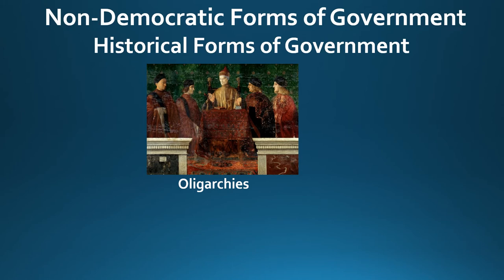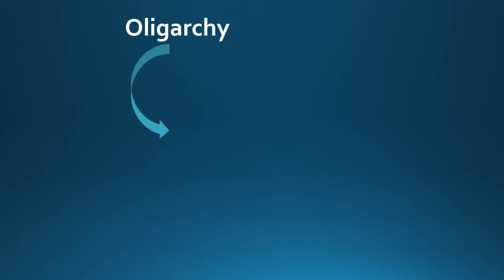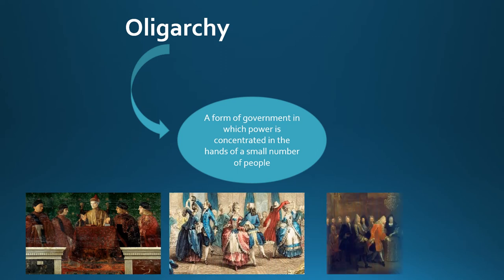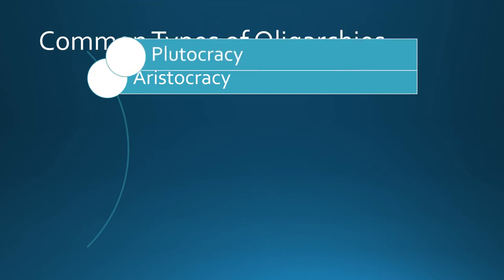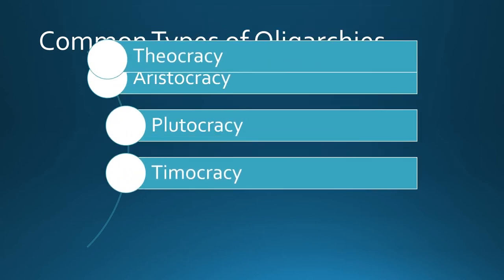Now moving to non-democratic forms of government, we will start with historical forms that were common in the past. Oligarchies were a common historical form of government — an oligarchy is a form of government in which power is concentrated in the hands of a small number of people. We will explain four common types of oligarchies: aristocracies, plutocracies, timocracies, and theocracies.